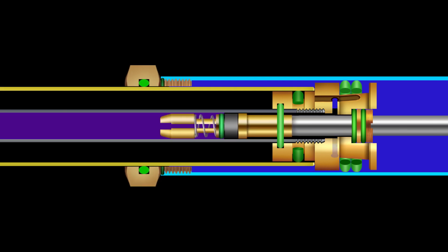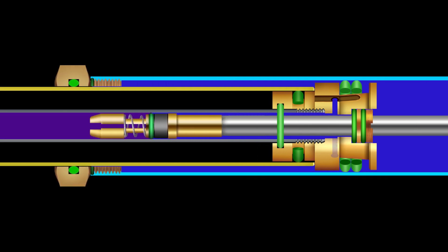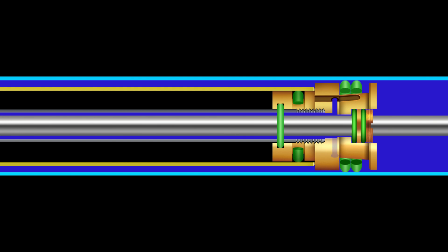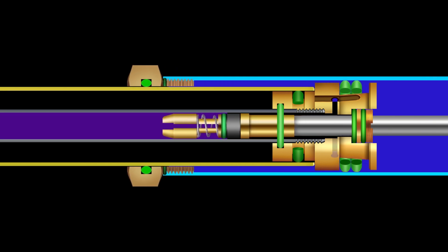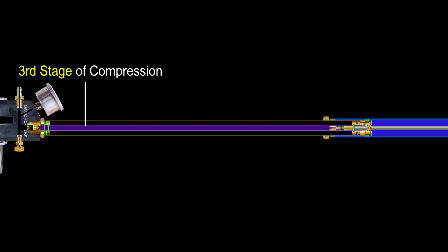This moderately pressurized air then enters the right side of the third tube where the space is expanding. At this point, the seal on the third piston closes and the third stage of compression takes place in the left portion of the third tube.